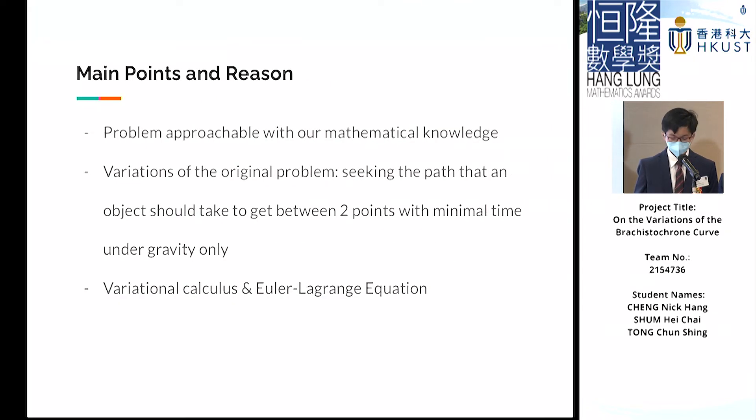The Brachistochrone Curve asks for a path between two given points that minimizes the total travel time of an object released from rest when only gravity is considered. We chose this topic because we found it approachable with our level of mathematical knowledge, and we had thought of many interesting variations of the problem that we could attempt. We will be using mainly the Euler-Lagrange equation, as the Brachistochrone problem is a problem in variational calculus.